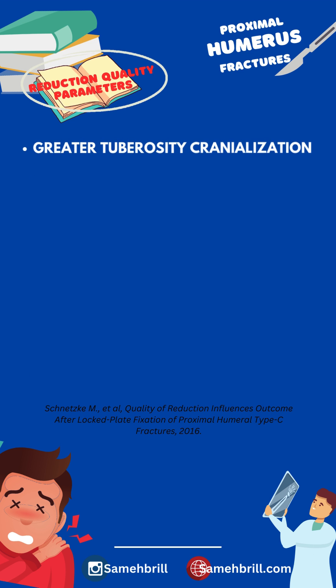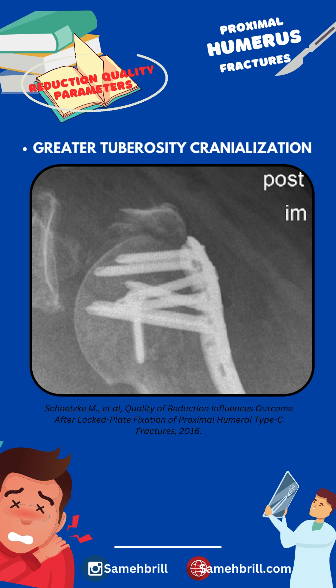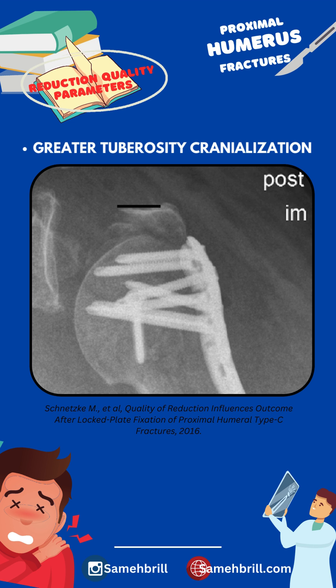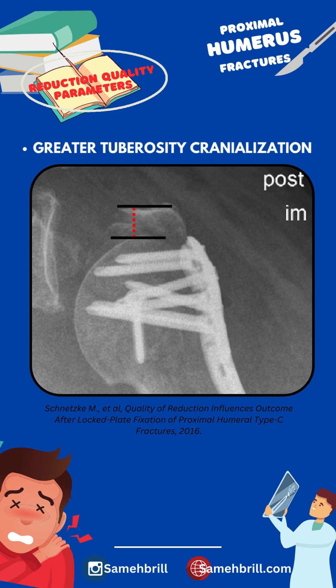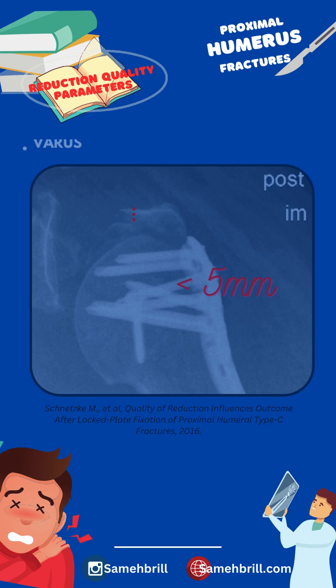As for the greater tuberosity cranialization, it is the transition zone between the greater tuberosity and the cartilaginous fracture line. It should also be less than five millimeters.